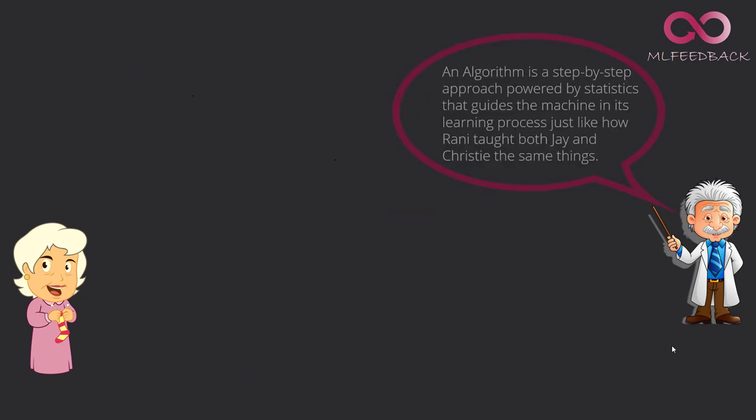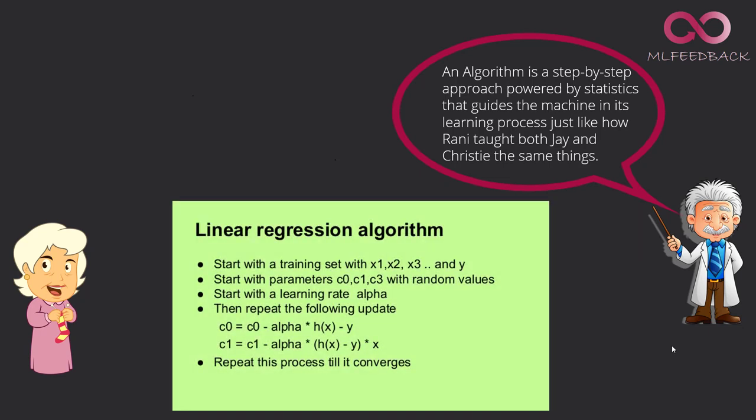An algorithm is a step-by-step approach powered by statistics that guides the machine in its learning process. Just like how Rani taught both Jay and Kristi the same things.